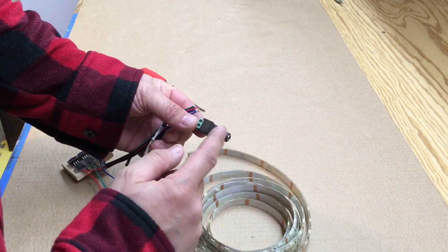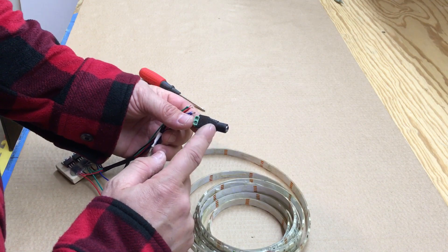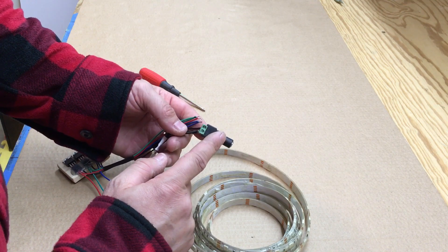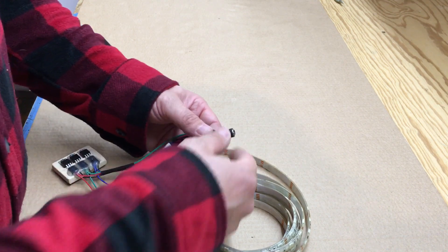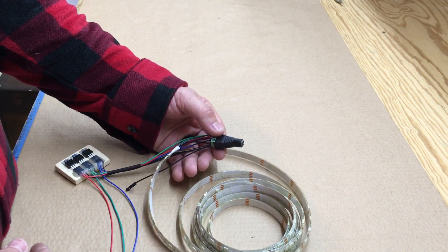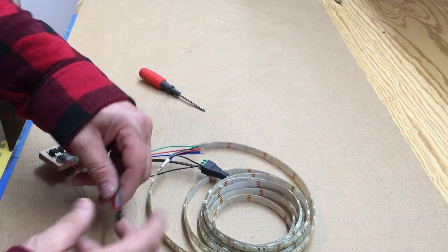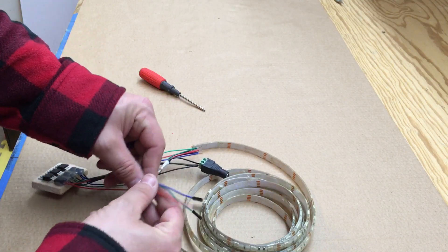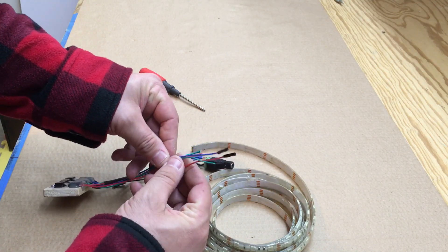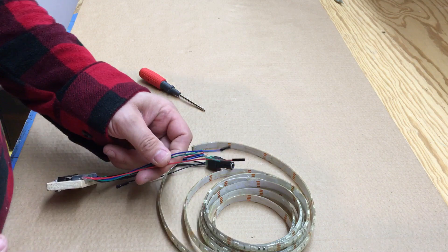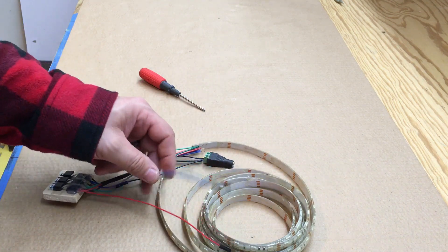Then what you'll do is we'll just plug in a power supply, 12 volt power supply to this here, which will power the LED strip. Then these three wires that will go to the Pi will control the LEDs and what we want it to do.